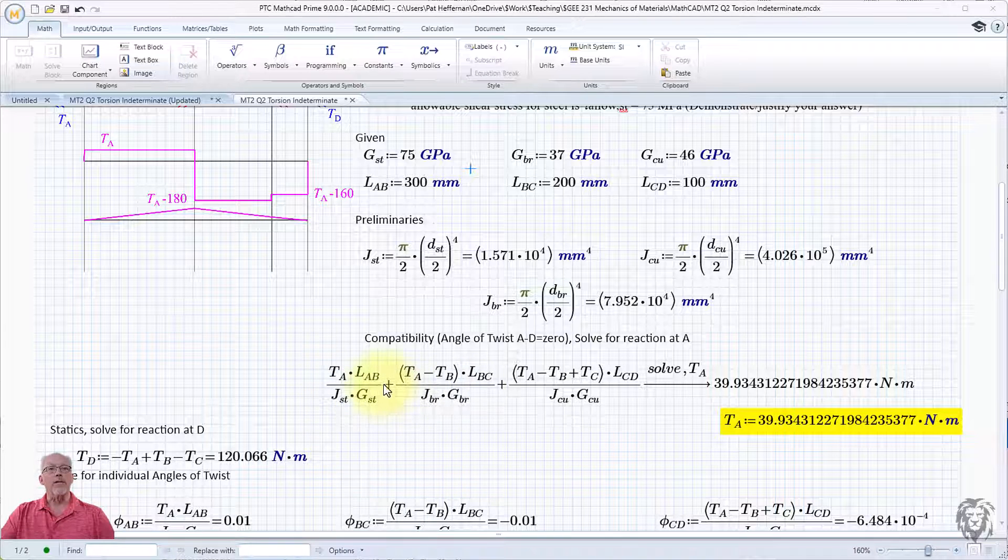So what I wanted to do is use the symbolic solver, that was no issue, to solve for TA. So here's the solution here. Now, trying to get the numeric solver to recognize that value for TA was the problem.